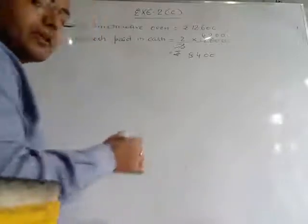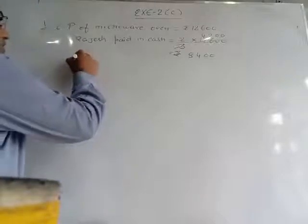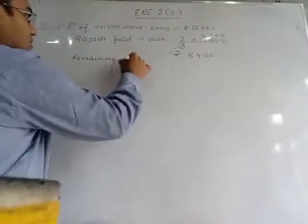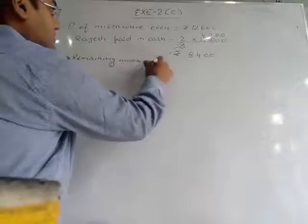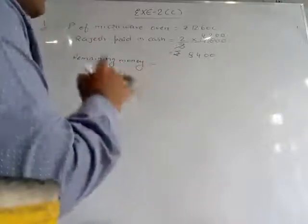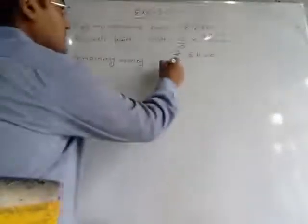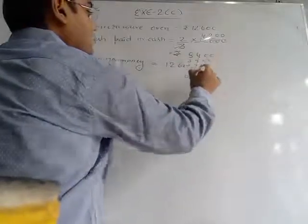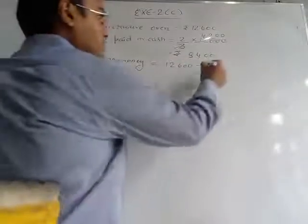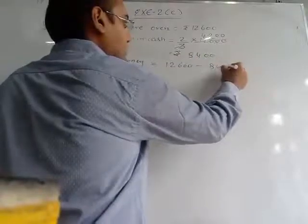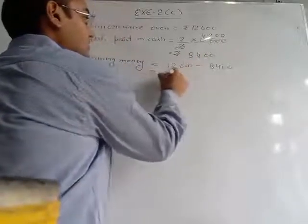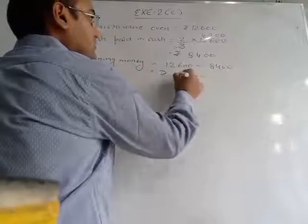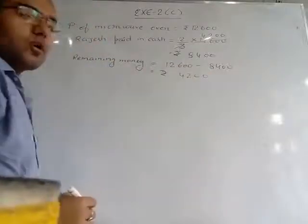Now we will find the remaining money. What is the remaining money after giving cash? Total cost of the microwave is 12,600. Out of that 12,600 we will subtract 8,400. On subtracting we get 4,200 rupees.